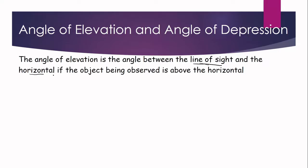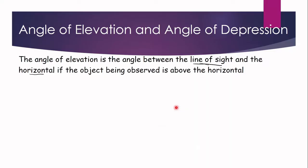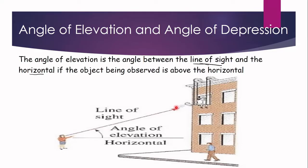So the horizontal is simply the eye level. In this illustration, here is our horizontal — suppose this is your eye level and this is your line of sight, going from the eye of the observer to the object being observed. The angle created between the line of sight and the horizontal is what we call the angle of elevation.